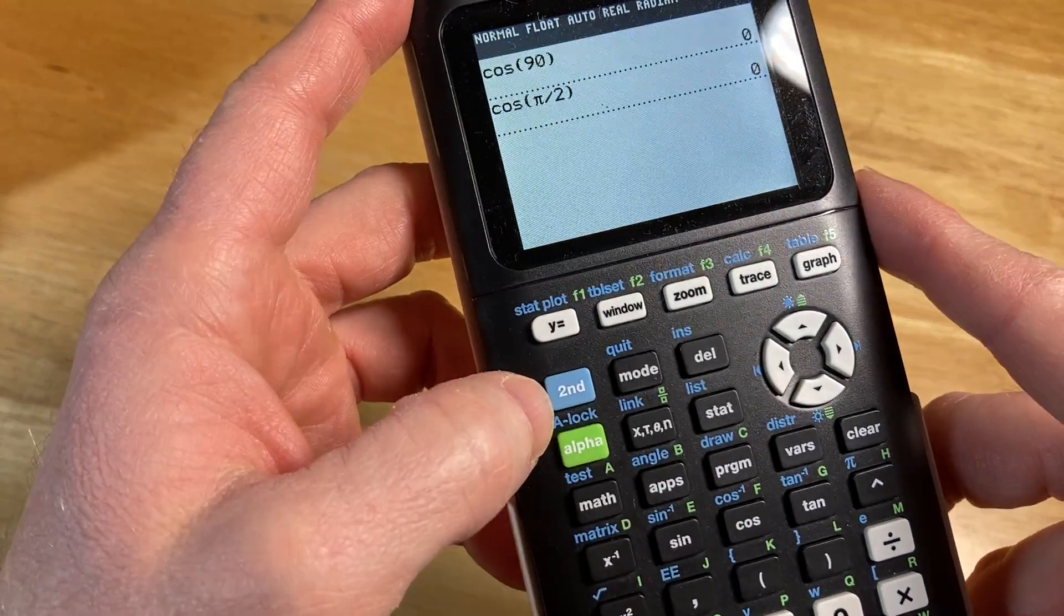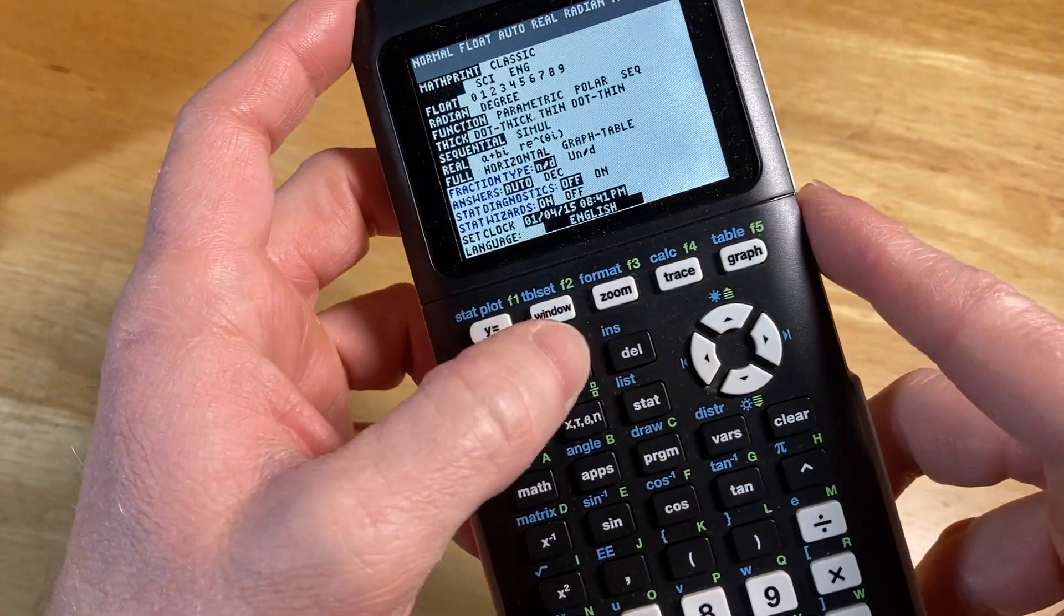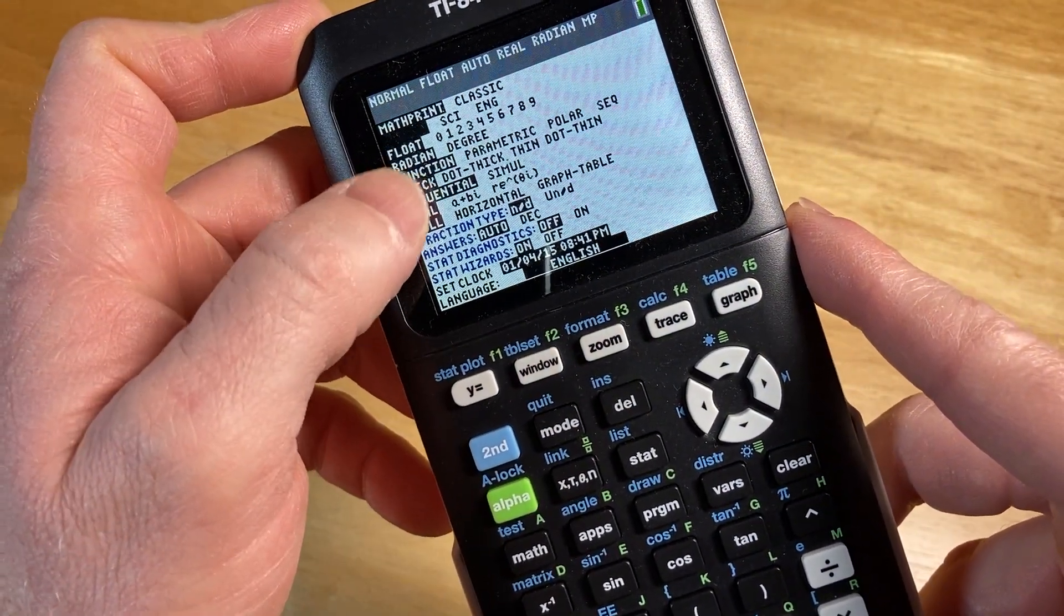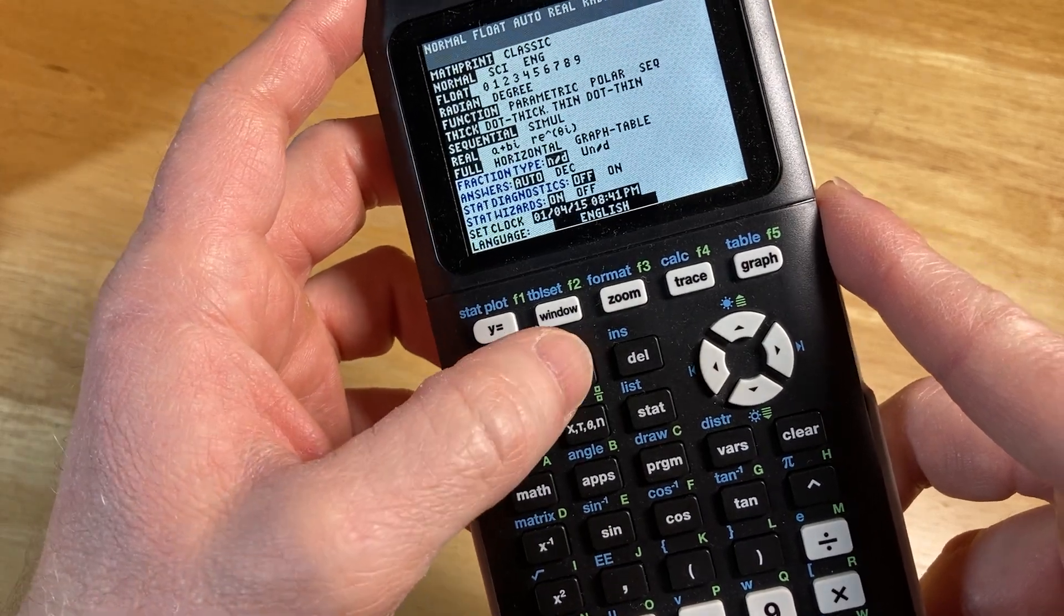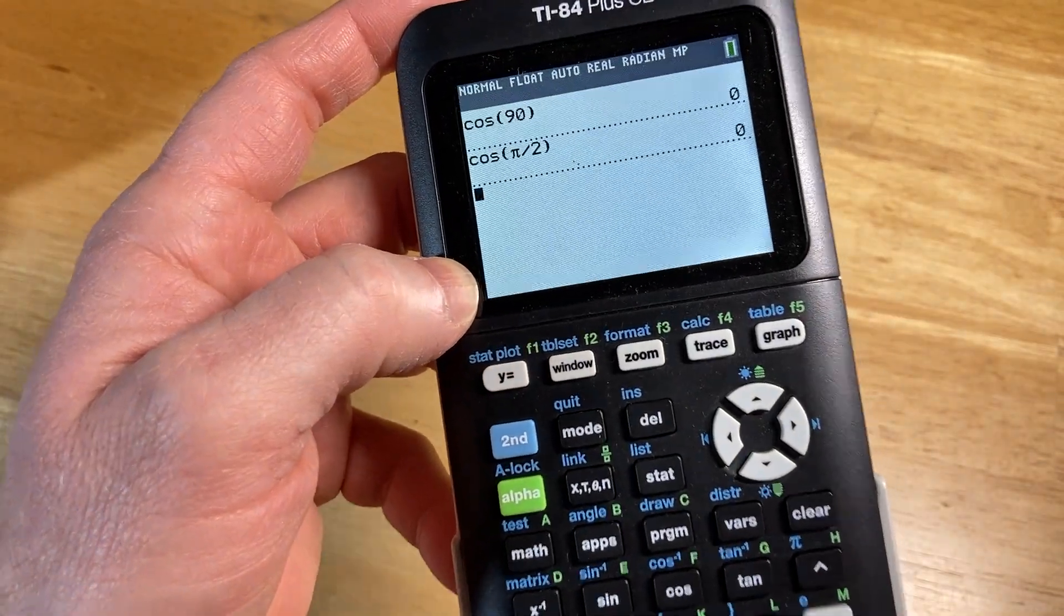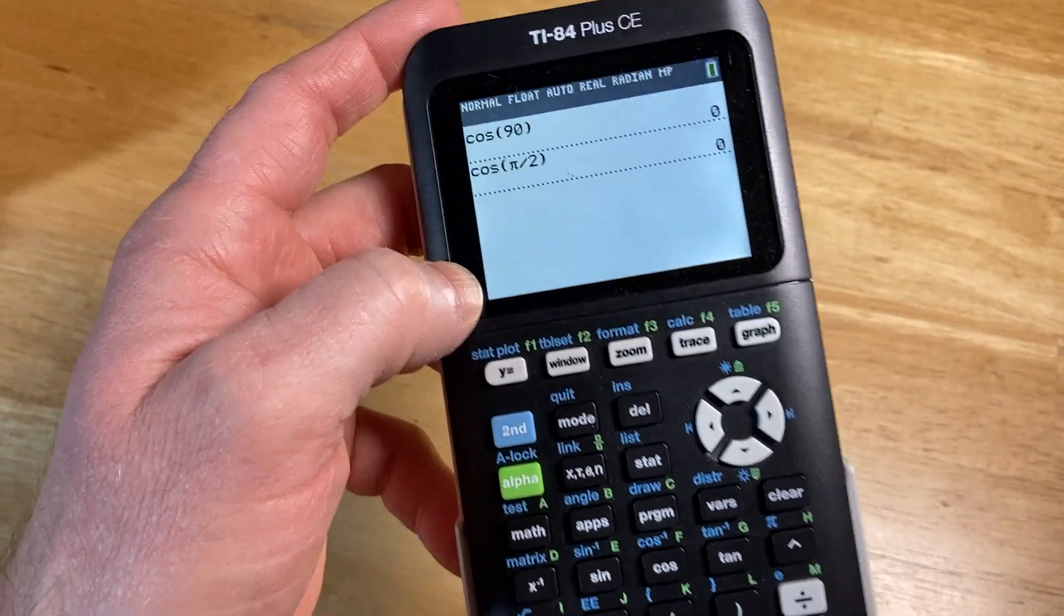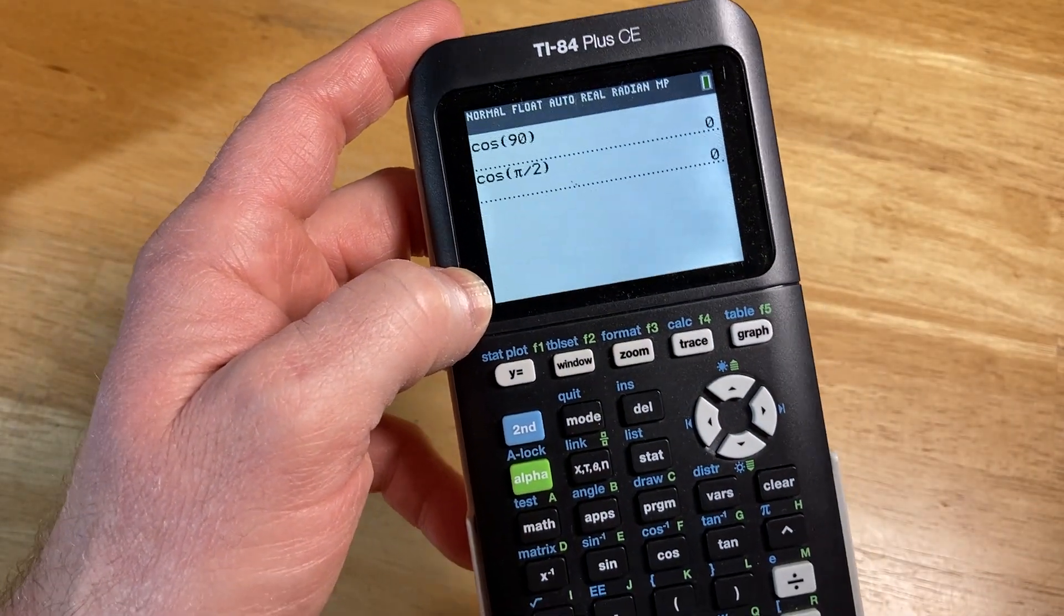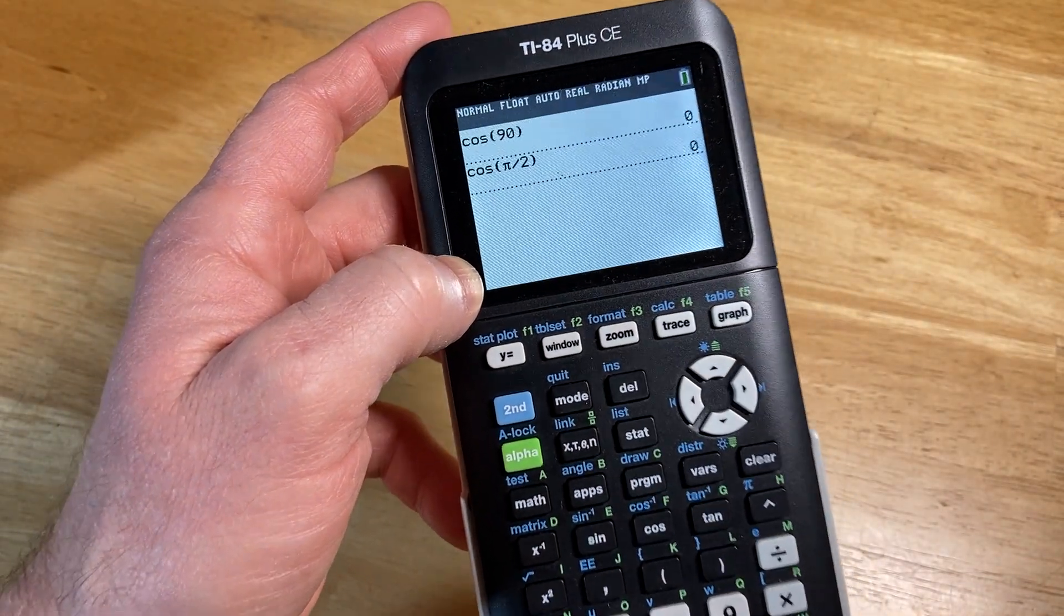So again, to switch between radian and degrees, you just go to mode, and then you can access it here, and then to get out of this menu, you hit second quit. That's it. I hope this video has been helpful, and hopefully now you know how to switch back and forth between radian and degree mode in the TI-84 Plus CE graphing calculator. Good luck.